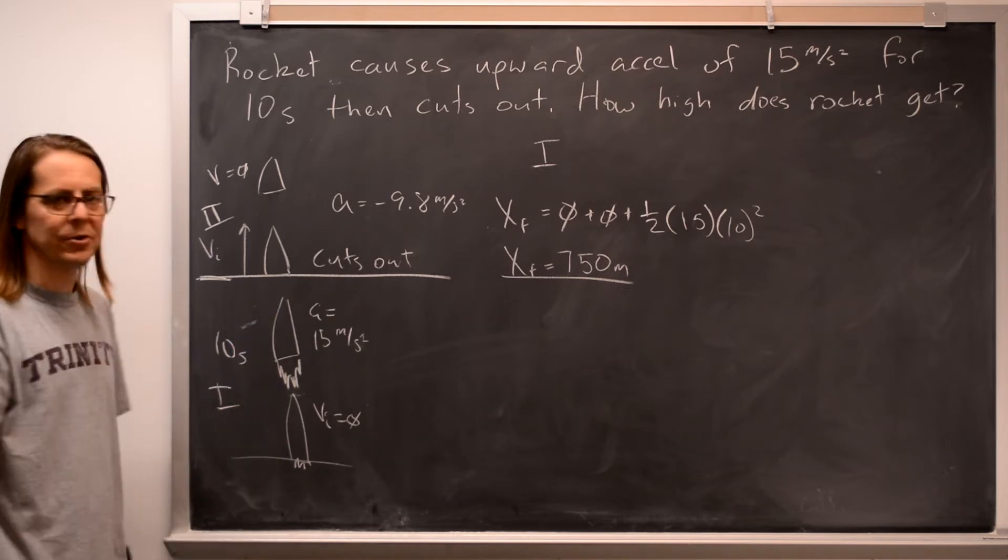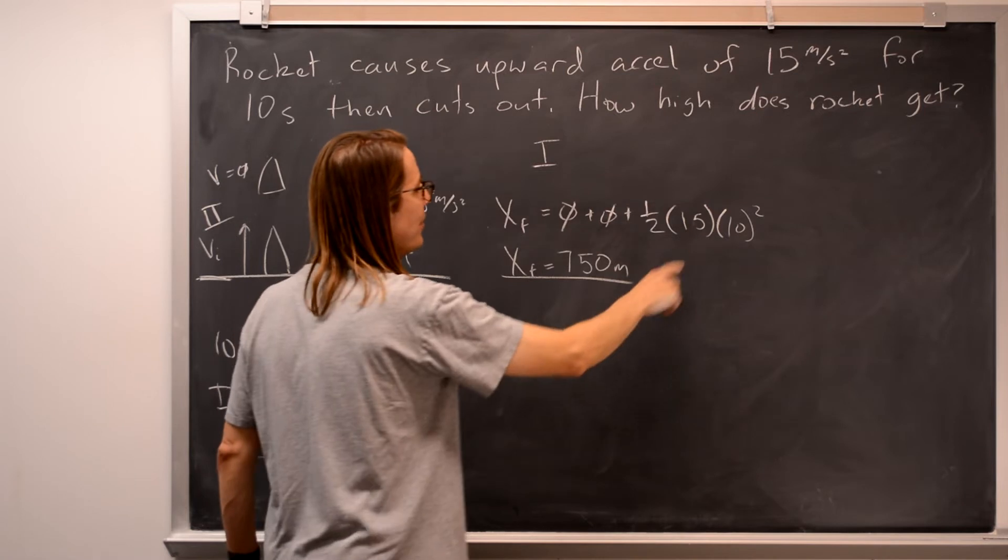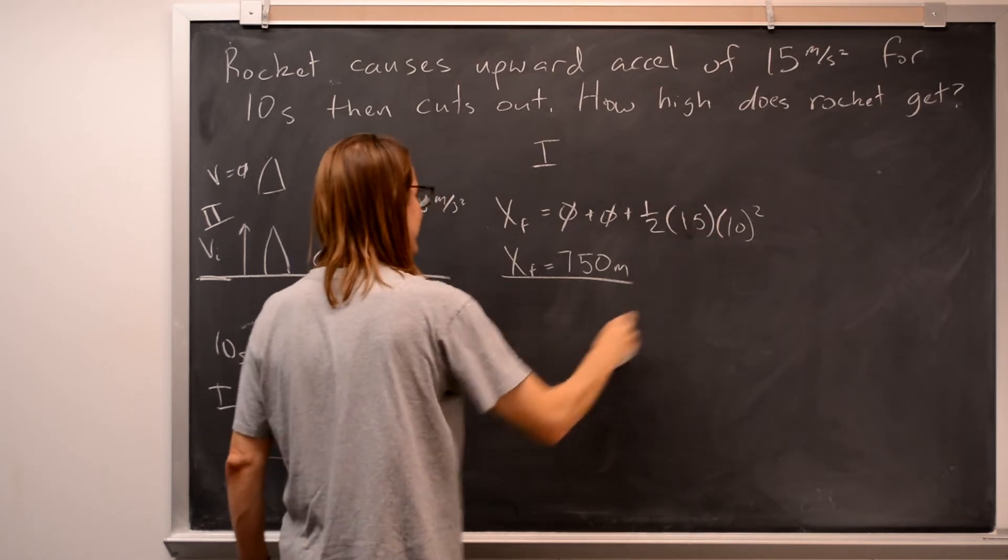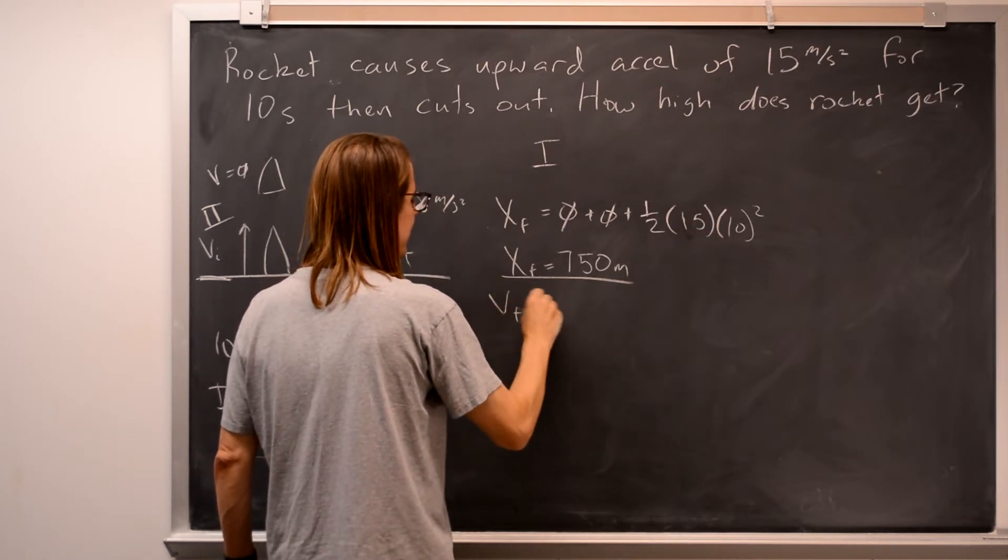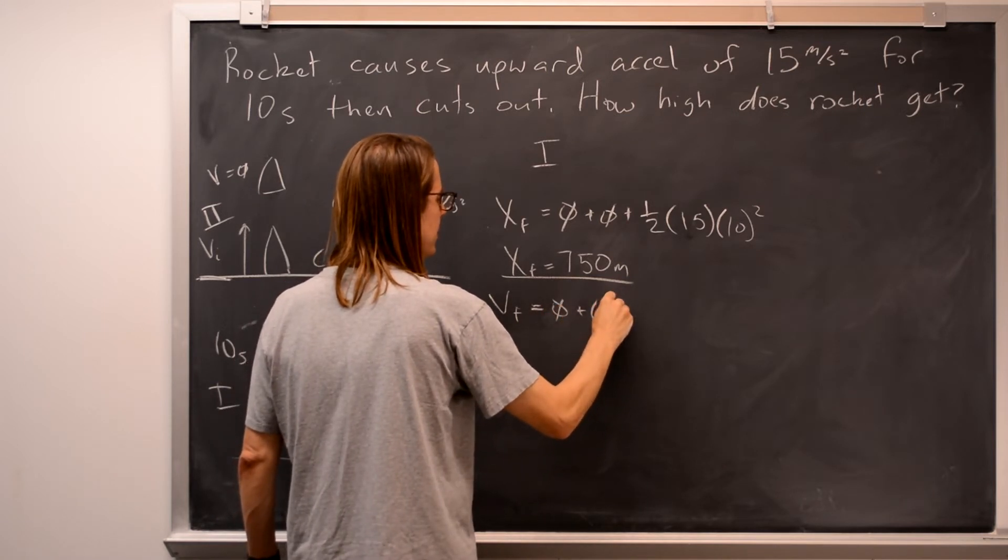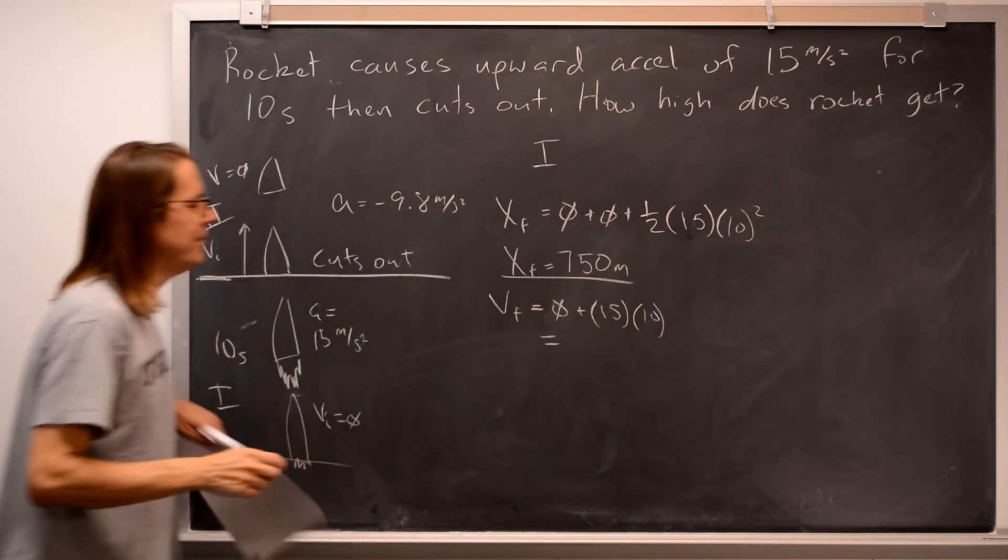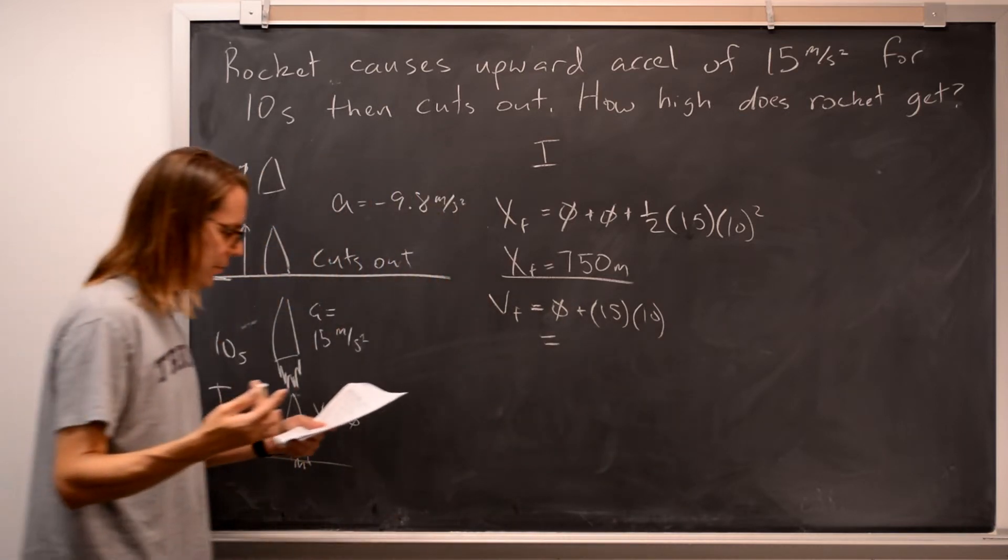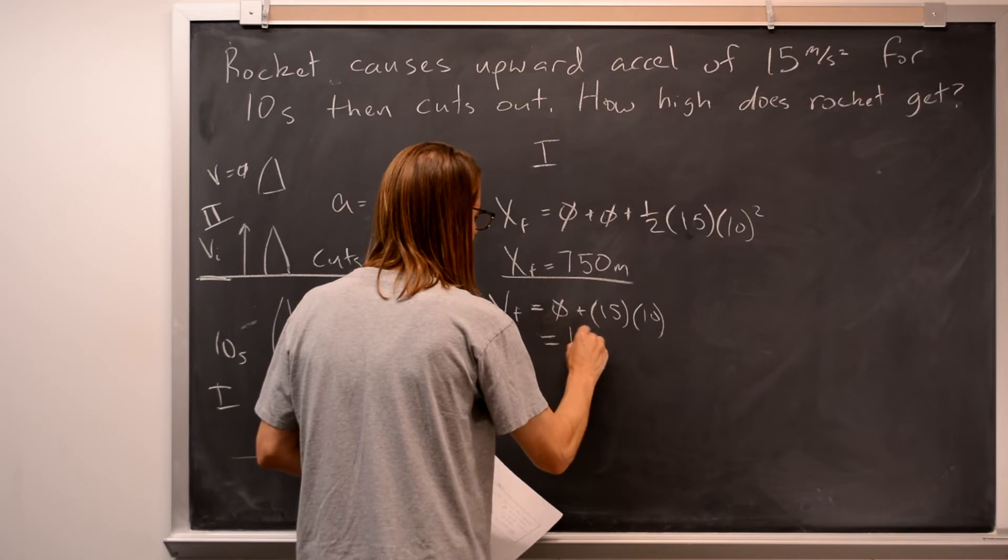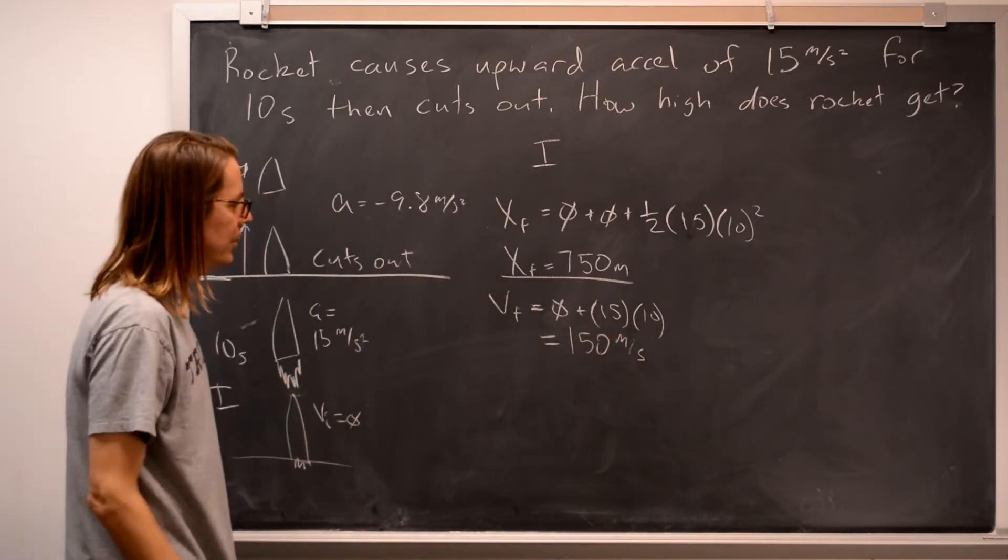Okay, so basically we have free fall with an initial velocity. That's all we've got to do. Except, look, we don't know the initial velocity. We can calculate it pretty fast, though, because we know we went 15 meters per second squared for 10 seconds. That's just V final equals V initial 0 plus acceleration times time. All right, so we know the final velocity of that thing is 150 meters per second. So that's right here. This VI is 150 meters per second.